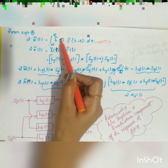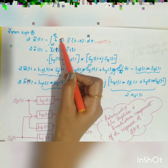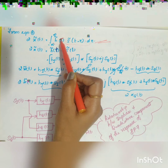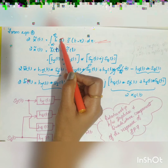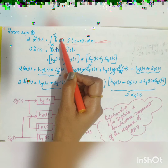Diagrammatically, this represents the relationship between the in-phase and quadrature components of the bandpass filter response. si(t)*hi(t) minus sq(t)*hq(t) goes to a subtractor giving 2·xi(t), while si(t)*hq(t) plus sq(t)*hi(t) goes to a summer giving 2·xq(t). This completes the time domain procedure for complex representation of bandpass signals and systems.